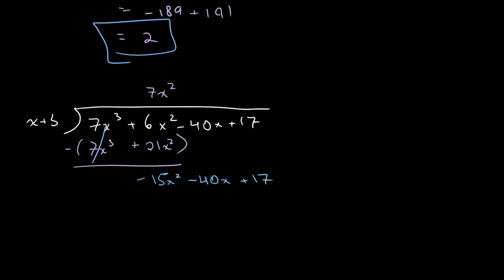And then we divide once again. We get -15x. So -15x² minus 45x, subtract, and we get these two cancel out. This gives us 5x + 17.